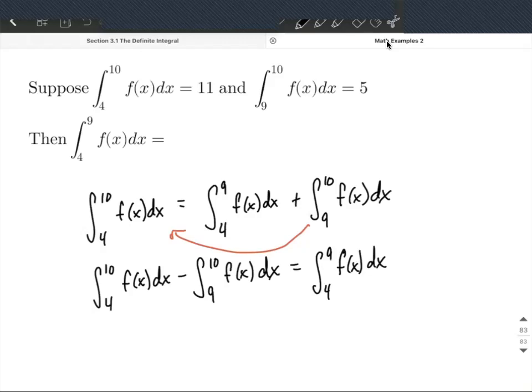And now from here, let's fill in the information that's given. From 4 to 10 was 11, minus from 9 to 10 was 5. So that works out to be 6 is equivalent to our integral from 4 to 9 f of x dx.